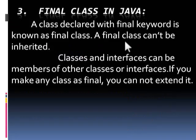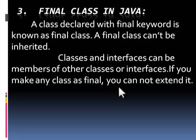Final class in Java: a class declared with the final keyword is known as a final class. A final class cannot be inherited. Classes and interfaces can be members of other classes or interfaces. If you make any class final, you cannot extend it.